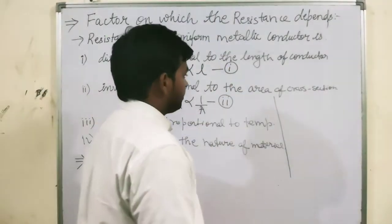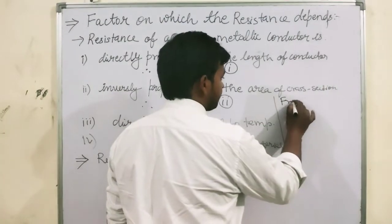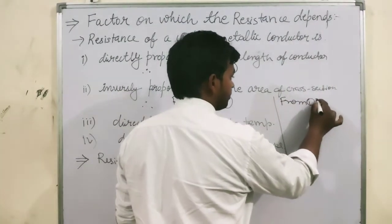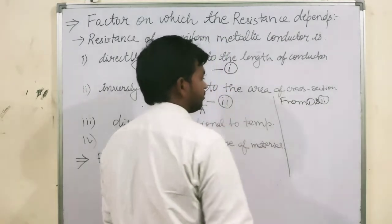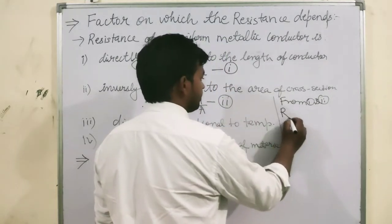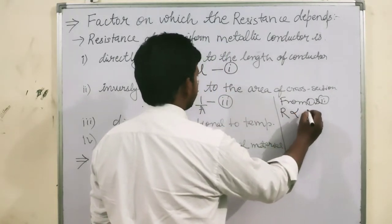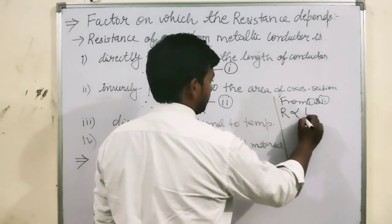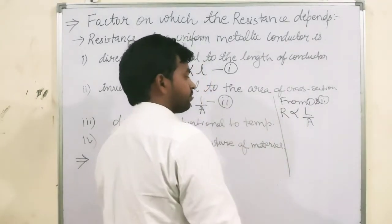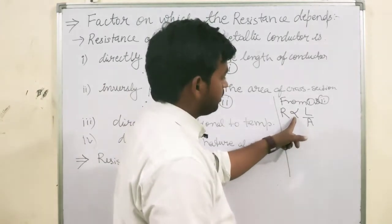Now, from first and second equation, we get R as L by A.